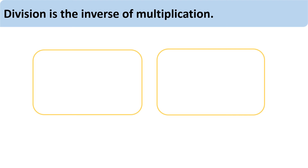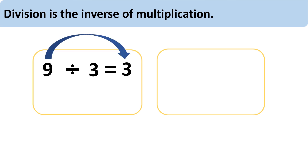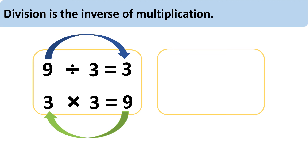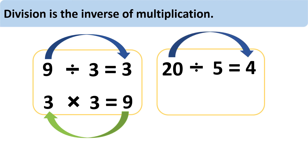Division is the inverse of multiplication — in other words, division is the opposite of multiplication. Look at this number sentence: 9 divided by 3 equals 3. The opposite multiplication sentence for this will be 3 multiplied by 3 equals 9. We are reading the same division sentence backwards, changing the symbols only.